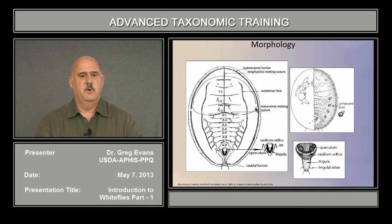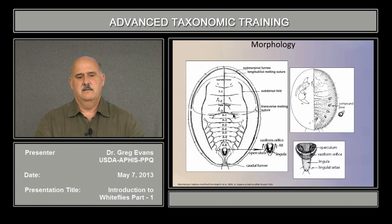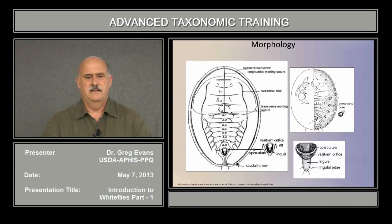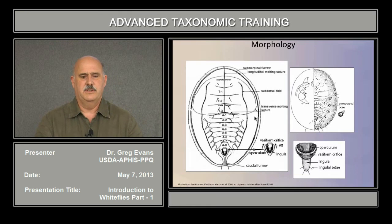This is the transverse molting suture. Along here it separates the cephalothorax from the abdomen. The distance as far as this reaches to the margin is important — for some genera or species it only goes as far as the submedial area, while for others it goes all the way out to the lateral margin. This is the sub-marginal furrow that runs along the sub-marginal area, and that's an important character in distinguishing genera. Subdorsal folds are present in the sub-dorsum, sub-medial, and medial areas.